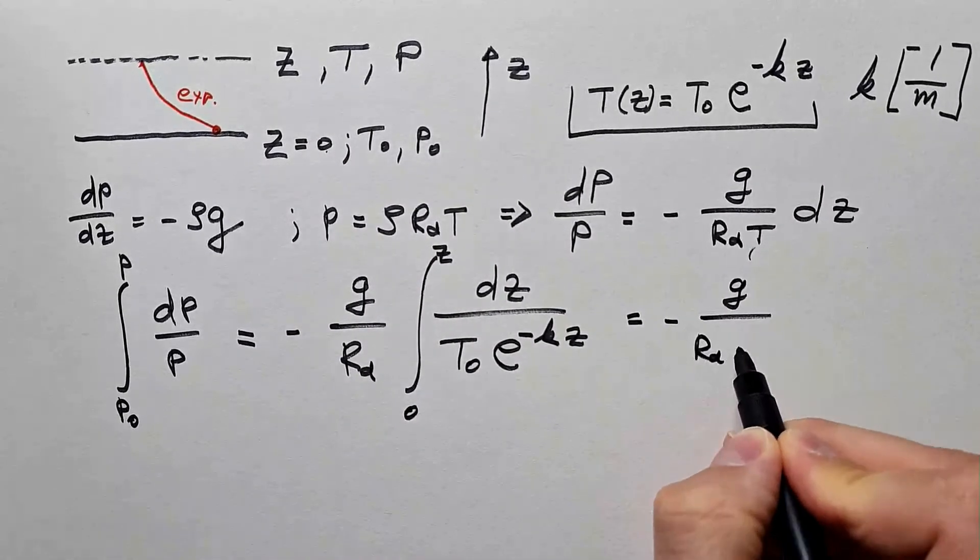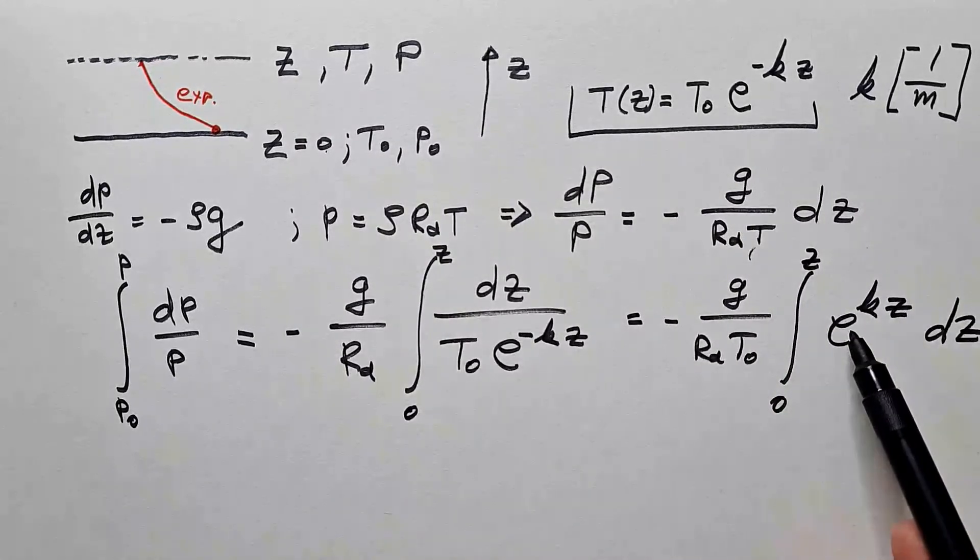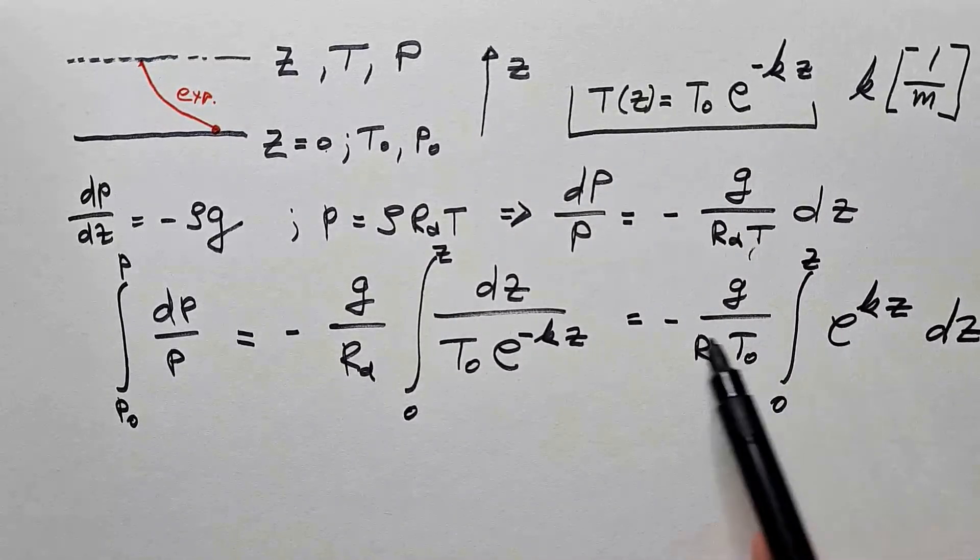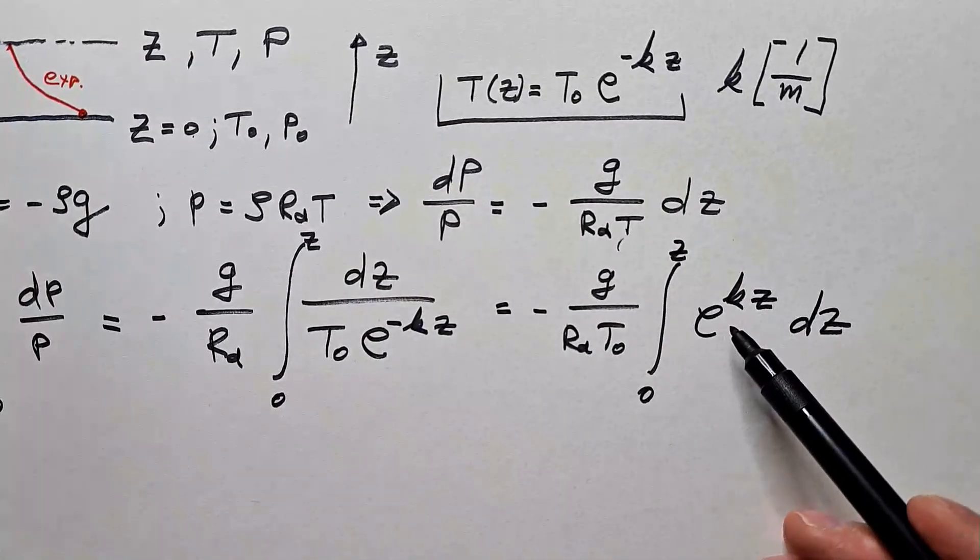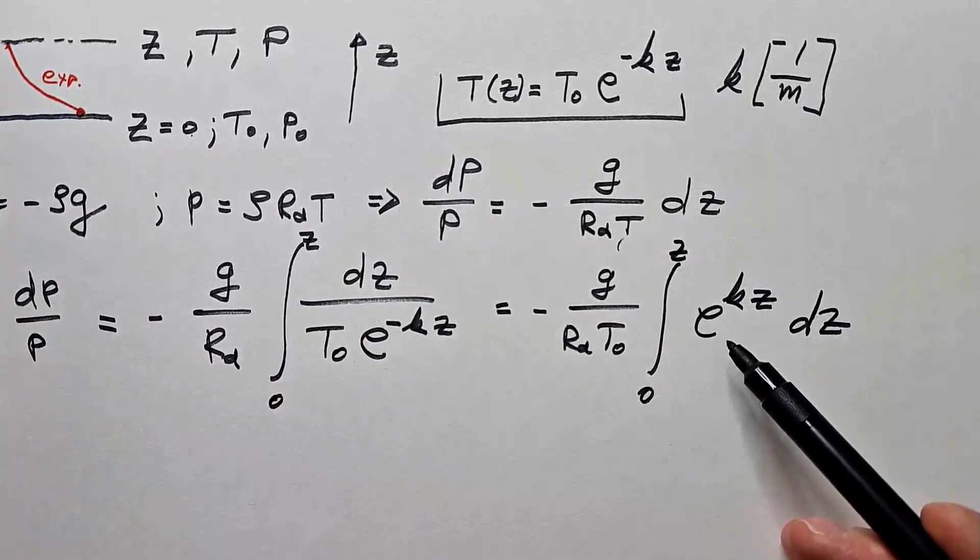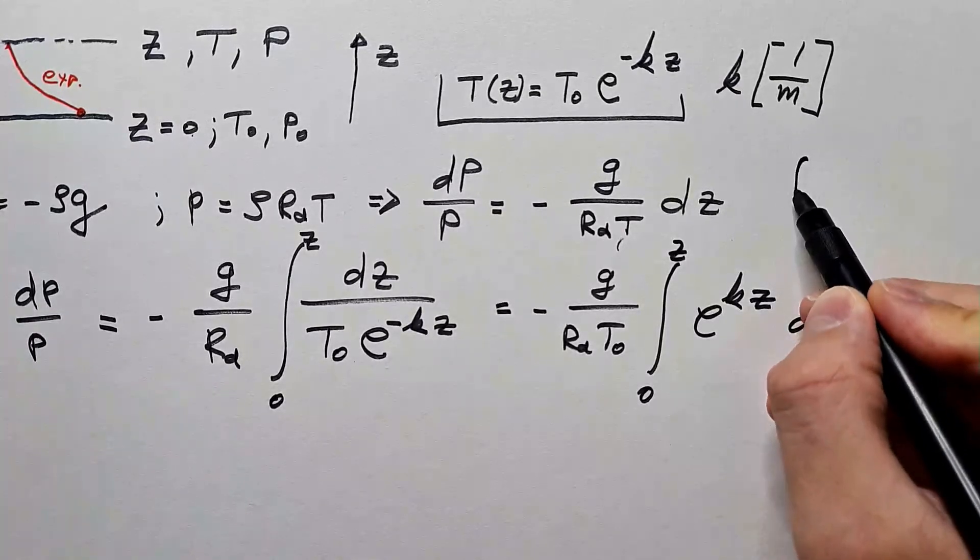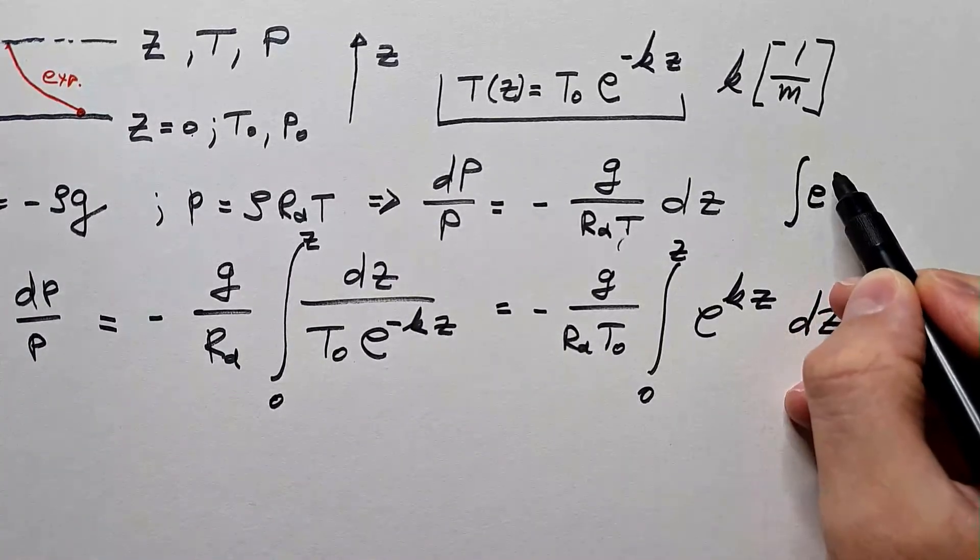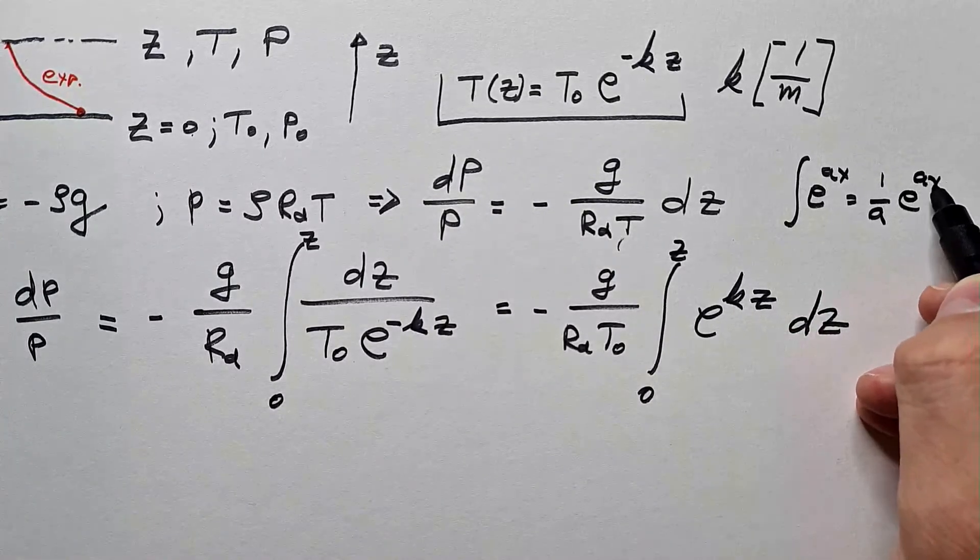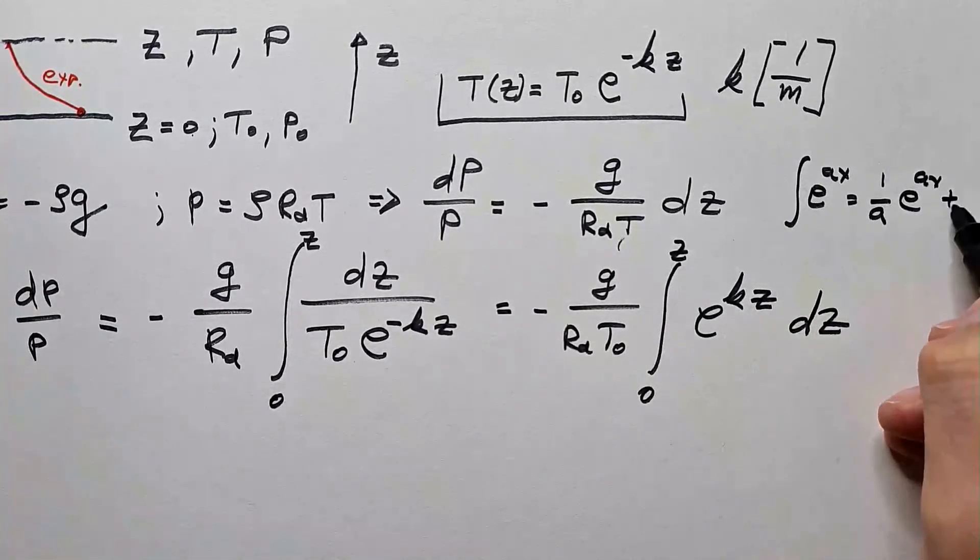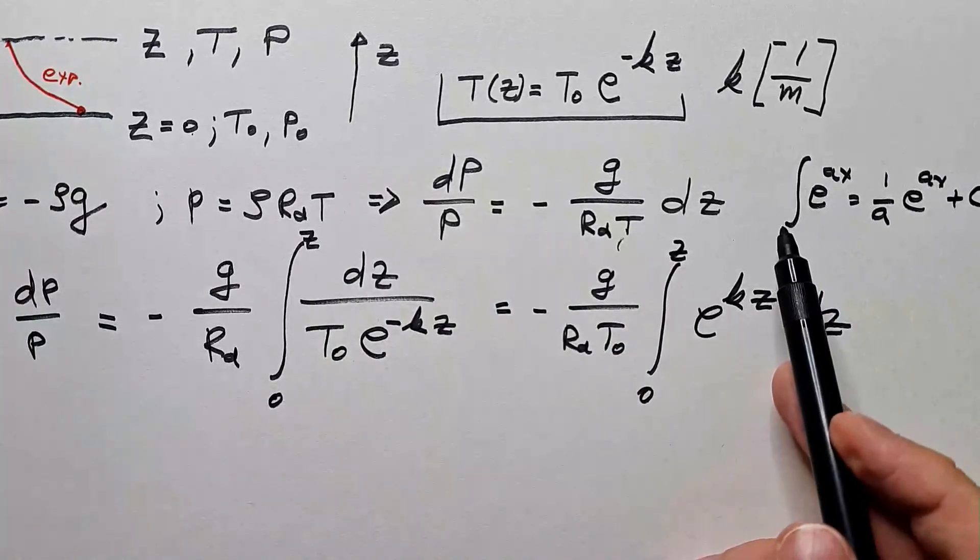Now, I will just simplify this right side by moving T0 in front of the integral. I also moved this upstairs but removed negative sign. Now, this is a very simple integral to solve. This is basically a table-based integral. I hope that you know that integral E to some Ax is equal 1 over A, E to Ax, and then plus constant C if this is indefinite integral.